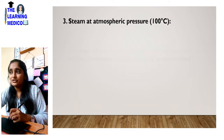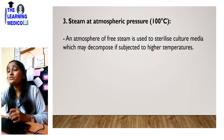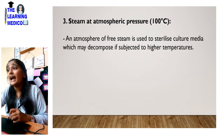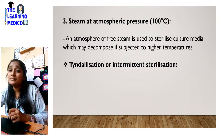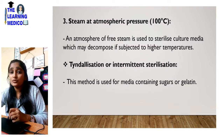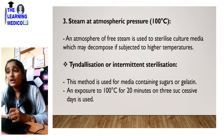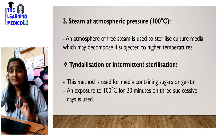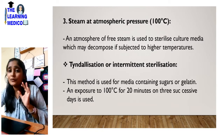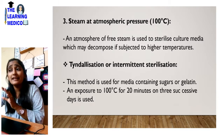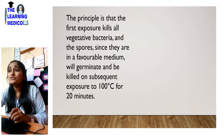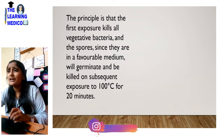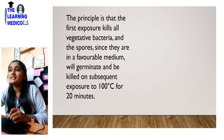Steam at atmospheric pressure — that is, 100 degrees Celsius — is used to sterilize culture media which can decompose if subjected to high temperatures. This method is used for media containing sugar and gelatin, with exposure at 100 degrees Celsius for 20 minutes on three successive days. This is called tyndallization, or intermittent sterilization. The principle is that the first exposure kills all vegetative bacteria, and the spores, now in an unfavorable medium, will germinate and be killed at subsequent exposures.